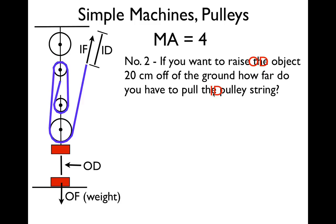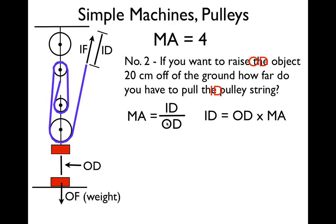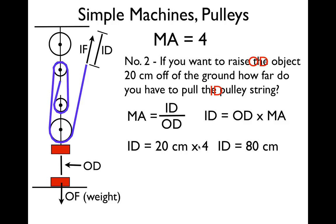We know the MA is 4 — we counted the number of strings: 1, 2, 3, 4. Now we're going to use our distance equation: mechanical advantage equals input distance divided by output distance. We want to solve for the input distance, so input distance equals output distance times MA. The output distance is 20 centimeters and the mechanical advantage is 4, so the input distance equals 20 times 4 — we're going to have to pull the string 80 centimeters, four times greater than the distance we actually want to raise the object.